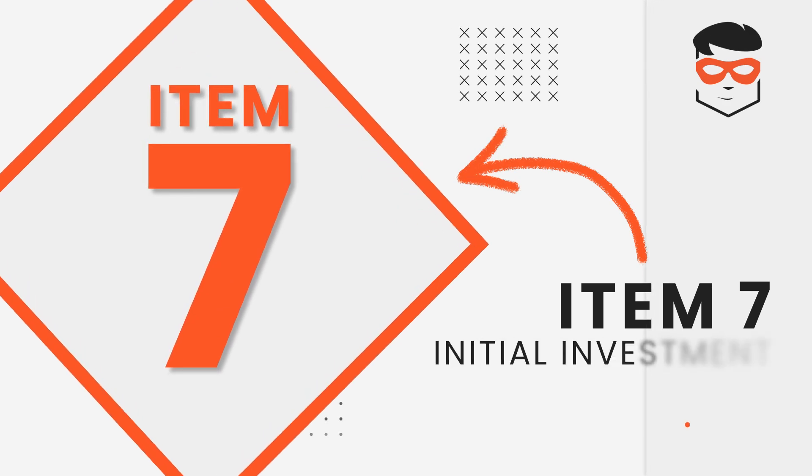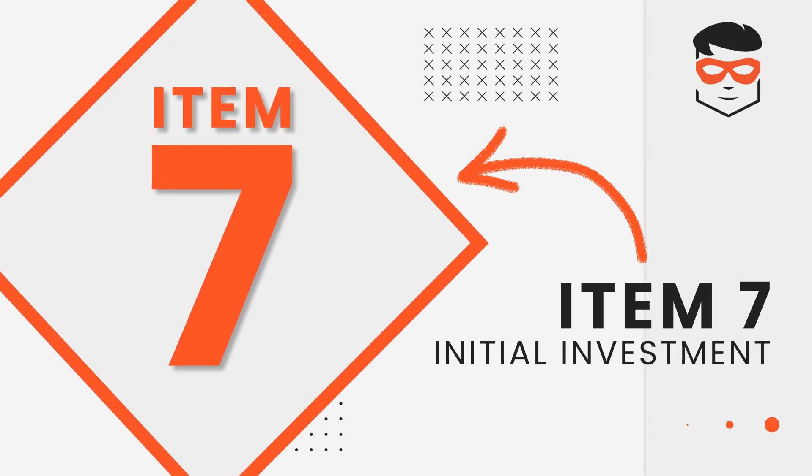That's one section done. The next section we're going to want to look at is Item 7. Type Item 7 in your search bar and scroll to that part of the document. Item 7 is going to show you the estimated low compared to the estimated high end of the initial investment to get the franchise open. What you're trying to do is better understand where you're going to fall in the investment and ensure you're going to have access to the funds needed to open this franchise.